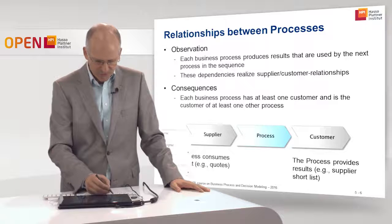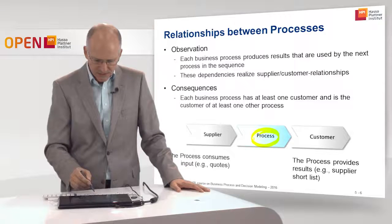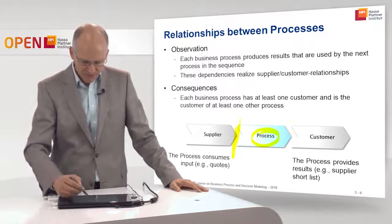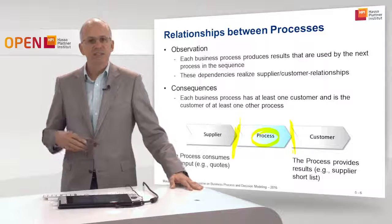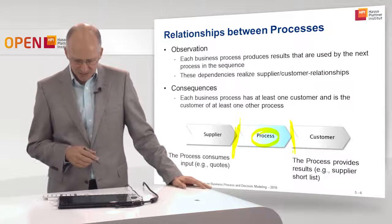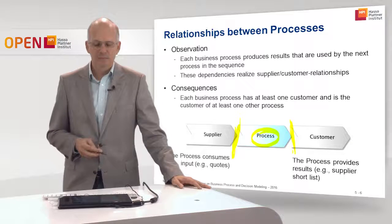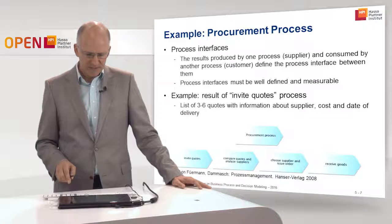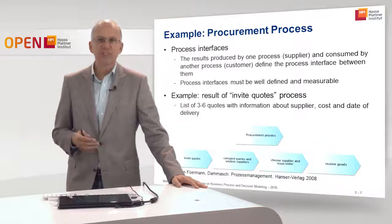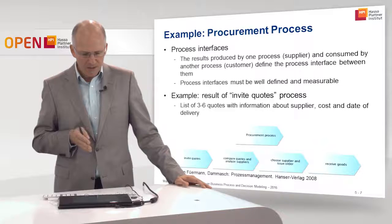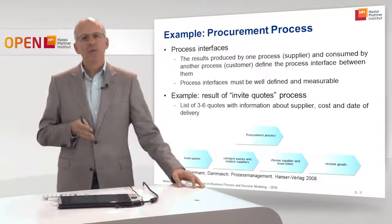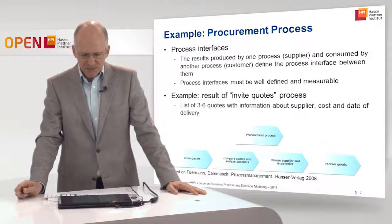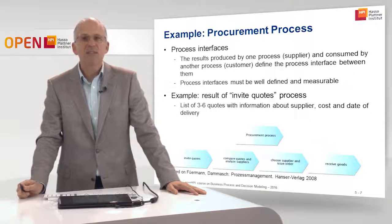In a more abstract view, the process in the middle consumes what is provided by the supplier — for instance, quotes — and produces something used by the customer process, such as a supplier shortlist. We define the process interface as the handover position between the supplier process and the customer process: the results produced by one process and consumed by another define the process interface between them.